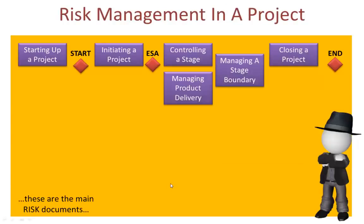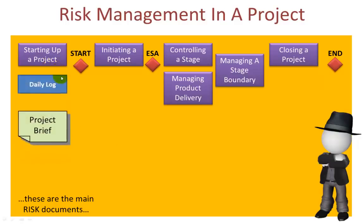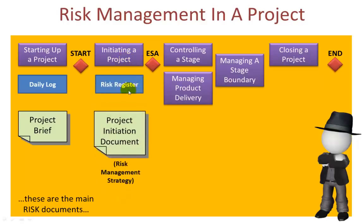Let's look at the main points within a typical project using the PRINCE2 processes where risks will need to be managed. Pre-project, when using the Starting a Project process, we have the daily log — it's here that we capture any risks and record appropriate actions. The project brief and the initiation stage plan, including risks in carrying out the initiation stage, form the basis for the project board's decision whether to proceed to Initiating a Project. In the Initiating a Project process, the risk register is set up and any risks needing formal management that already sit in the daily log will be transferred to it, and the risk register will be used throughout the remainder of the project.